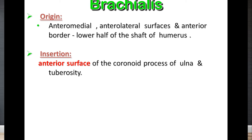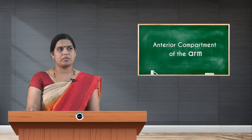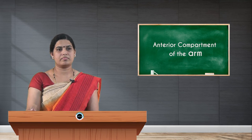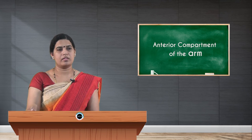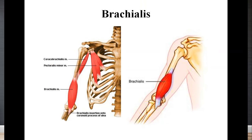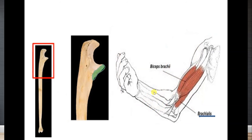The lateral part of brachialis is supplied by the radial nerve. The action of the muscle is that it is a strong flexor at the elbow joint. You can see the brachialis muscle going to the tuberosity of the ulna and mainly to the coronoid process of the ulna. So these are the three muscles — coracobrachialis, biceps brachii, and brachialis — of the anterior flexor compartment of the arm.